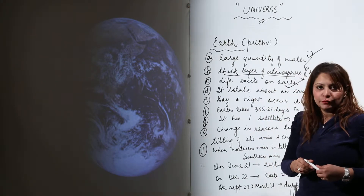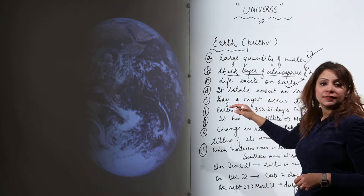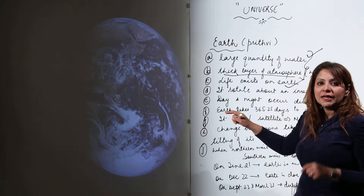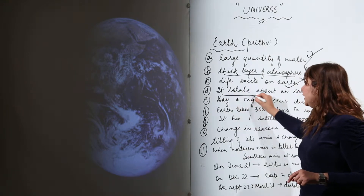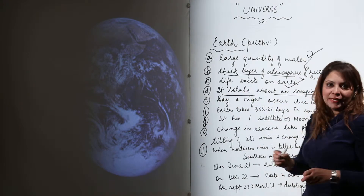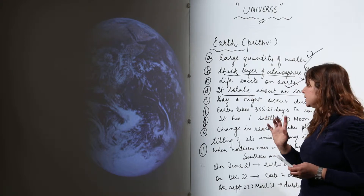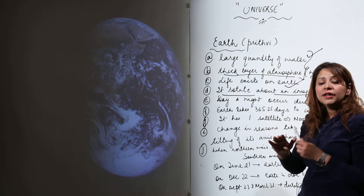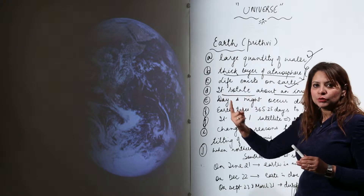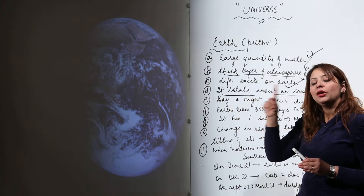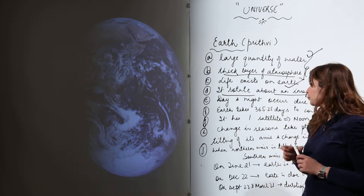Earth rotates about an imaginary axis, and it also revolves around the sun. So it is rotating about its own imaginary axis and revolving around the sun in a definite orbit.